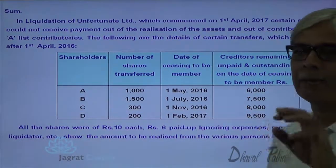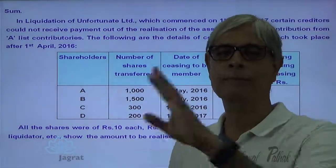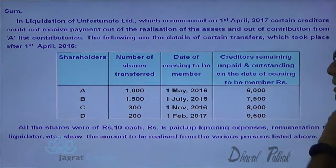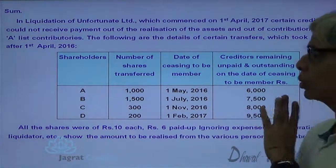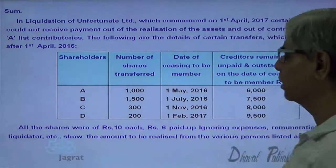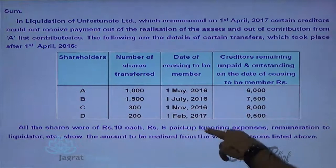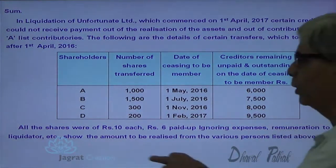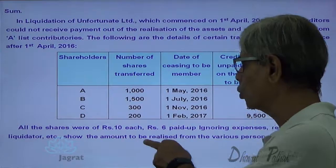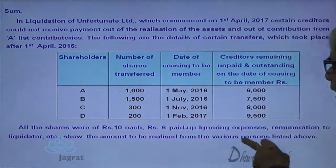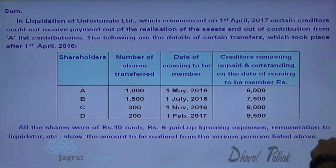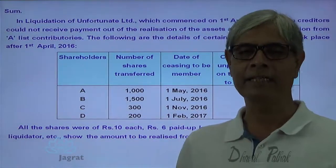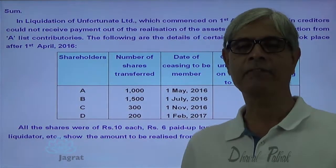C has to contribute for the liability till the date of transfer of its shares, that is 8,000. The subsequent increase of 1,500, C cannot be asked to contribute for. All these shares were of Rs. 10, paid up at Rs. 6 per share — ignoring expenses and remuneration to the liquidator etc. So the amount to be realized from the various persons A, B, C, D listed above — how much amount could be recovered from each — that we want to work out, and that is what is being questioned in this sum.